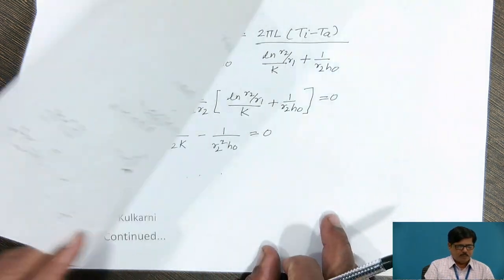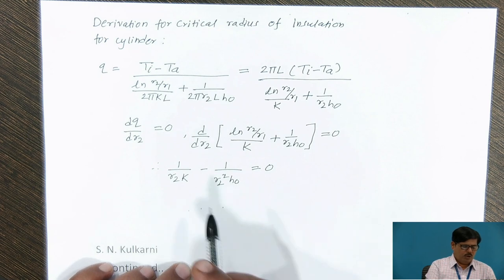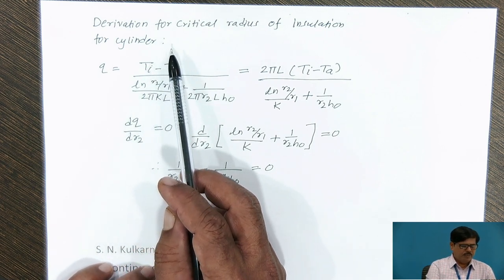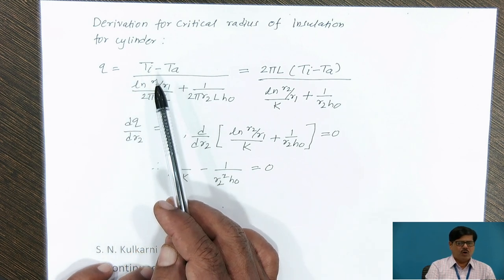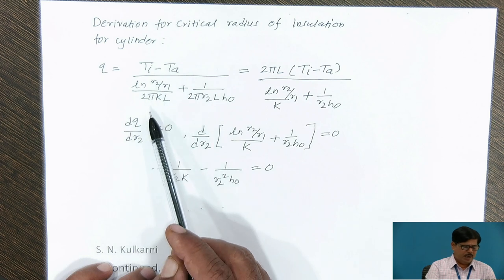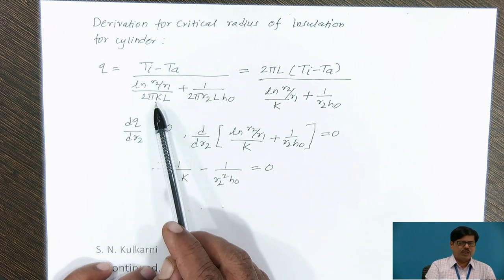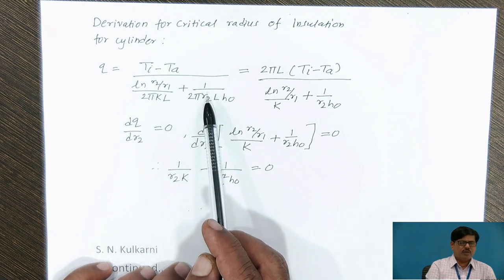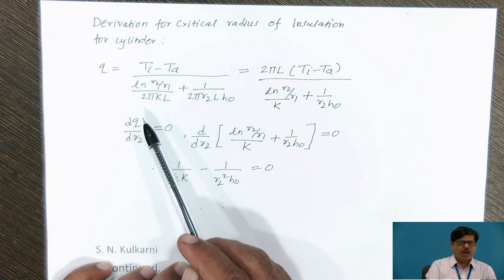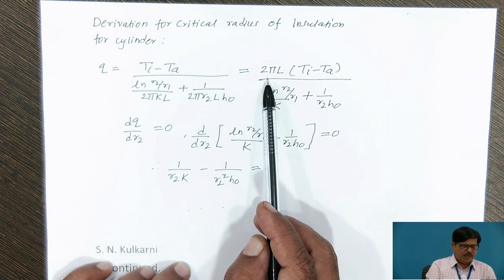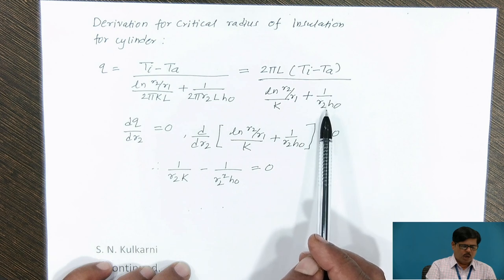Now let us derive the equation for critical radius of insulation for a cylinder. Considering the same geometry as earlier, the equation for heat flow rate for a hollow cylinder is given by Ti minus TA divided by ln(R2/R1) upon 2πKL plus 1 upon 2πR2L into HO. Taking 2πL common in the denominator and moving it to the numerator, we can write Q equal to 2πL(Ti minus TA) upon ln(R2/R1)/K plus 1 upon R2 into HO.